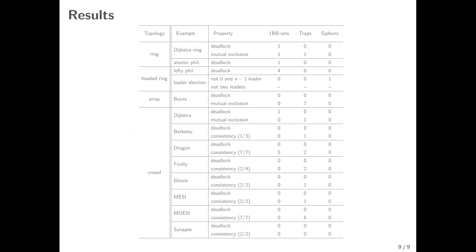In summary, we get readable invariants for parameterized systems by generalizing concepts from finite instances. If you have any questions, I'd be very happy to answer them.